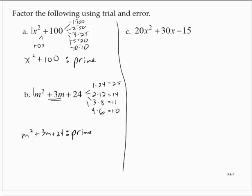20x squared plus 30x minus 15. Well, the first thing I would notice here is that we have a common factor of 5. So I'll write this as 5 times 4x squared plus 6x minus 3.